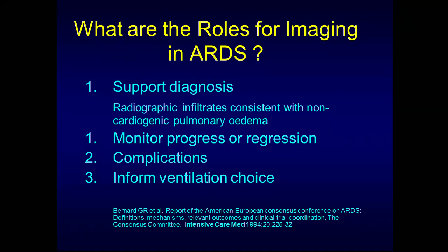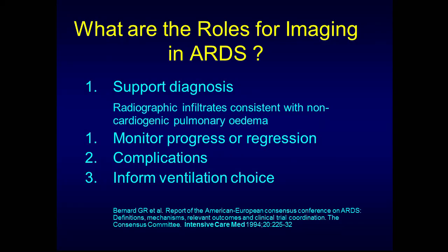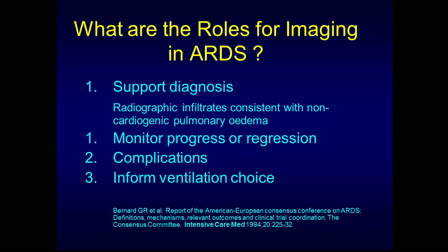We're going to discuss very briefly the roles of the three main imaging tools used in the chest in the ICU setting: regular routine chest X-rays, CT, and a bit about ultrasound. The top three things we use imaging for are: firstly, to support our diagnosis of ARDS — one hallmark being bilateral pulmonary infiltrates that are not cardiac in nature — secondly, for progression or regression of disease and complications, and thirdly, to help inform difficult ventilation choices.